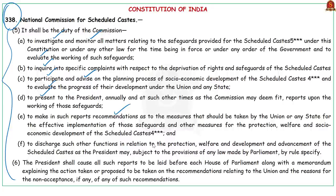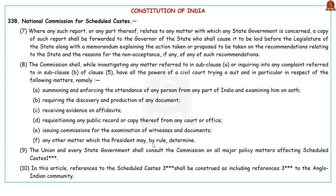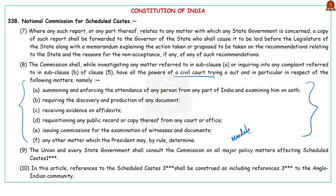The commission also presents reports to the president on the working of safeguards — either annually or otherwise — with recommendations regarding measures to be taken by concerned states or union territories for effective implementation of safeguards, and the protection, welfare and socio-economic development of Scheduled Castes. To undertake these functions, the National Commission for Scheduled Castes has been given all the powers of a civil court. Most importantly, the constitution provides for mandatory consultation by union and state governments with the commission on all major policy matters affecting Scheduled Castes, in accordance with Article 338 Clause 9.